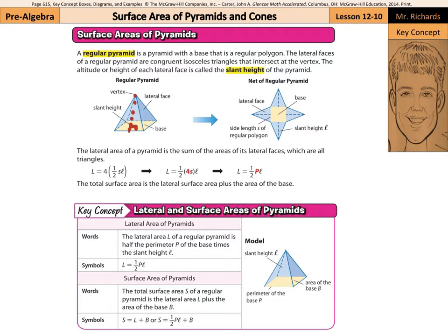The lateral area is 4 times one-half s times l, where s is the side length and l is the slant height — so base times height becomes s and l. As you simplify, 4s is simply the perimeter of the base. So we can write the lateral area as one-half times the perimeter times the slant height.